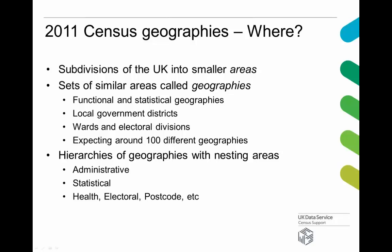What we call these sets of similar areas are geographies. So you get regions, counties, unitary authorities, districts — each is a separate geography. There tend to be hierarchies of these geographies, the most common being the statistical and the administrative hierarchies. We're expecting about 100 different geographies overall. The administrative geography would start at UK regions, counties, districts, wards. The statistical geography contains the smaller statistical geographies like the output areas, the super output areas, etc. There are also several other geographies specific to different uses such as health, electoral, and postcode geographies.